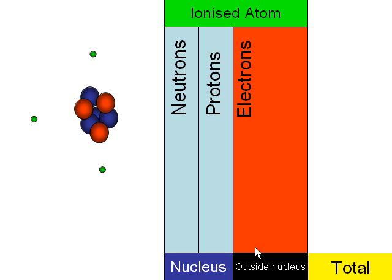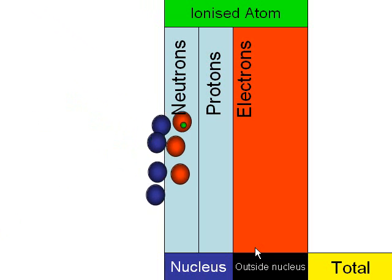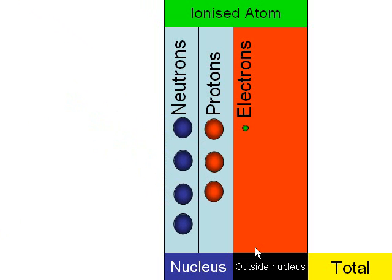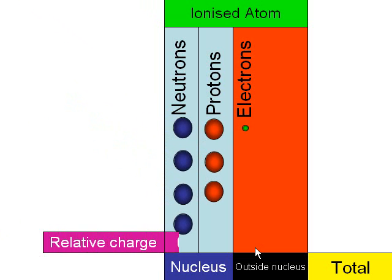An ionized atom is simply an atom which has had some electrons removed. If we look at the relative charges of an ionized atom, we can see that in this case we've got plus three protons and minus one electron, so the overall charge of the ionized atom is plus two.